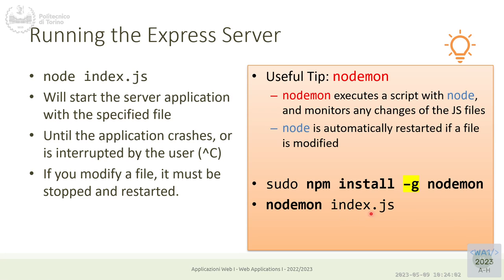Nodemon monitors index.js and any files it imports. When you save, nodemon detects the change and automatically stops and restarts the server — very handy during development. This is similar to React's live update mode. By default Express doesn't have this mechanism, but nodemon provides it. Alternatively, you can just restart manually each time you modify something.